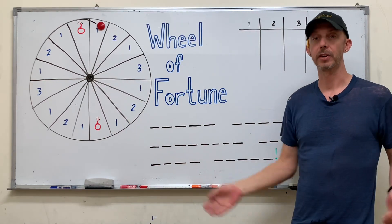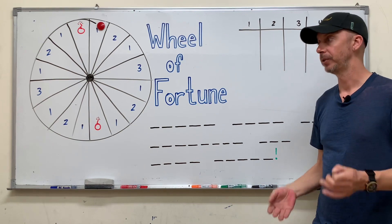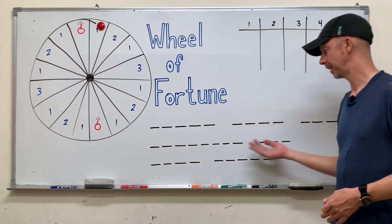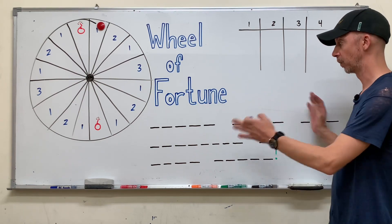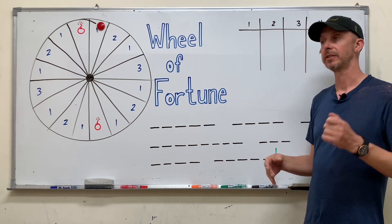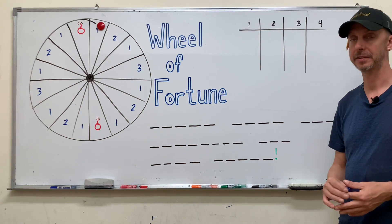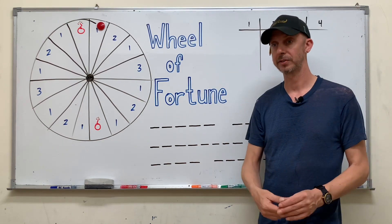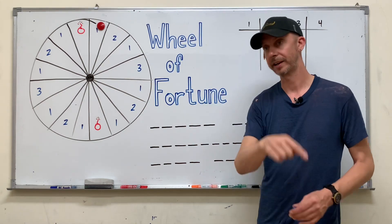We'll choose someone to go first. You can make them do some type of English task at this point, but the game itself includes an English task, which is spelling out words to form a sentence. So I don't need to inject extra English tasks. What I would do is just choose somebody to go first and play in a clockwise fashion.